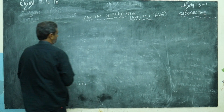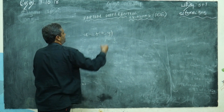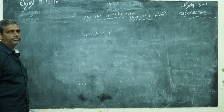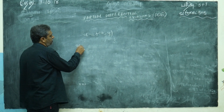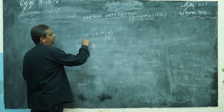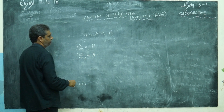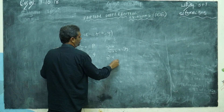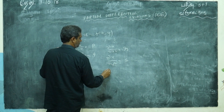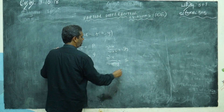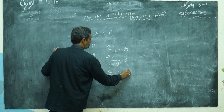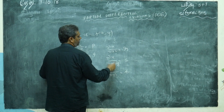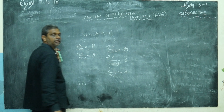We are considering two independent variables — more than one, generally we discuss two independent variables. So, suppose u is a function of x and y. You can remember: ∂u/∂x = p, ∂u/∂y = q, ∂²u/∂x² = r, ∂²u/∂x∂y = s, ∂²u/∂y² = t. These are the notations I will use.